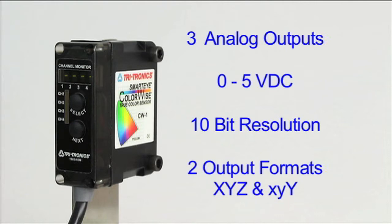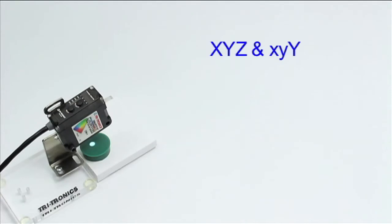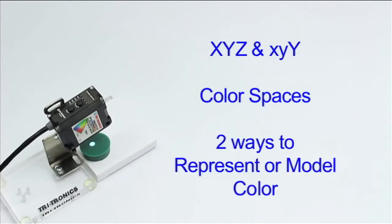These are XYZ and XYY. These names, XYZ and XYY, refer to what are called color spaces. Simply put, a color space is a way to represent or model color. Using the analog outputs in either XYZ or XYY is easy and requires only a basic understanding of the signals provided.